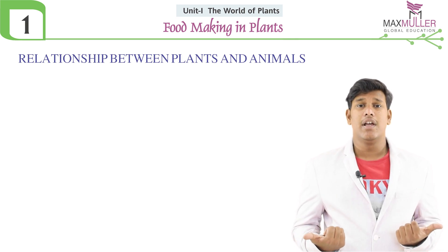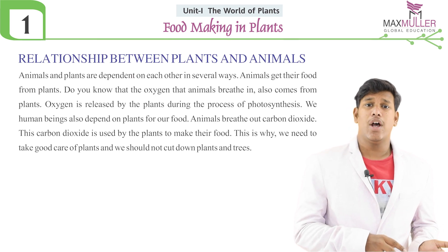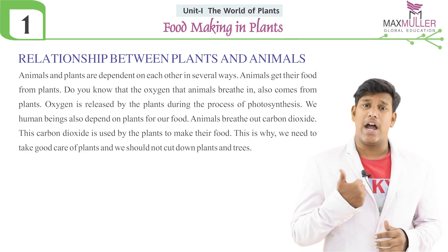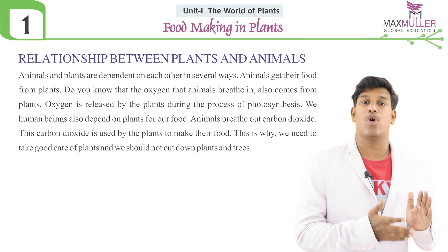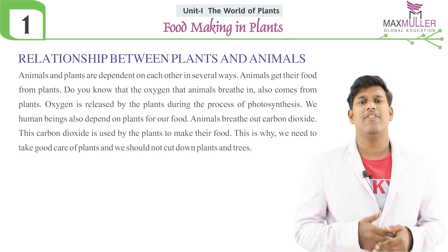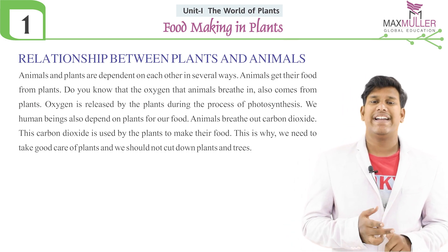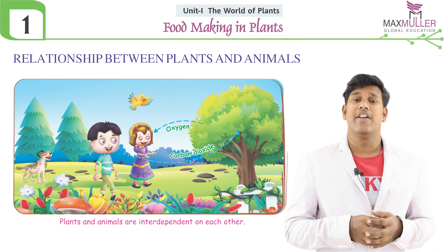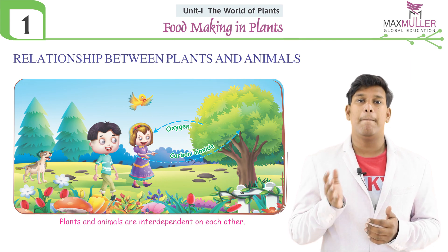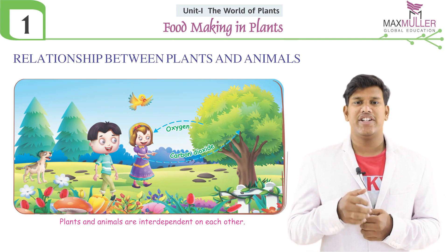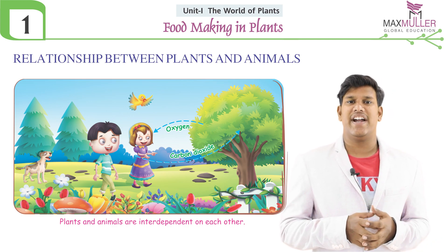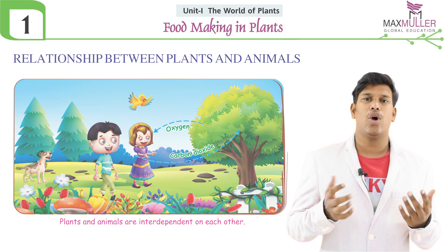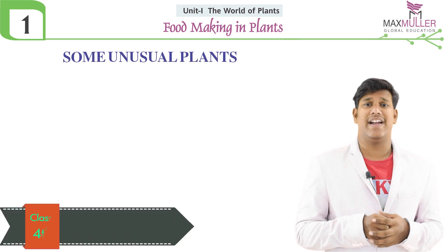Do you know the relationship between plants and animals? They are both interlinked. Animals depend on plants for food and oxygen, and plants depend on animals for carbon dioxide, which plants use to prepare their own food. To maintain this healthy relationship, we should not cut down plants and should plant more trees to increase the level of oxygen around us.